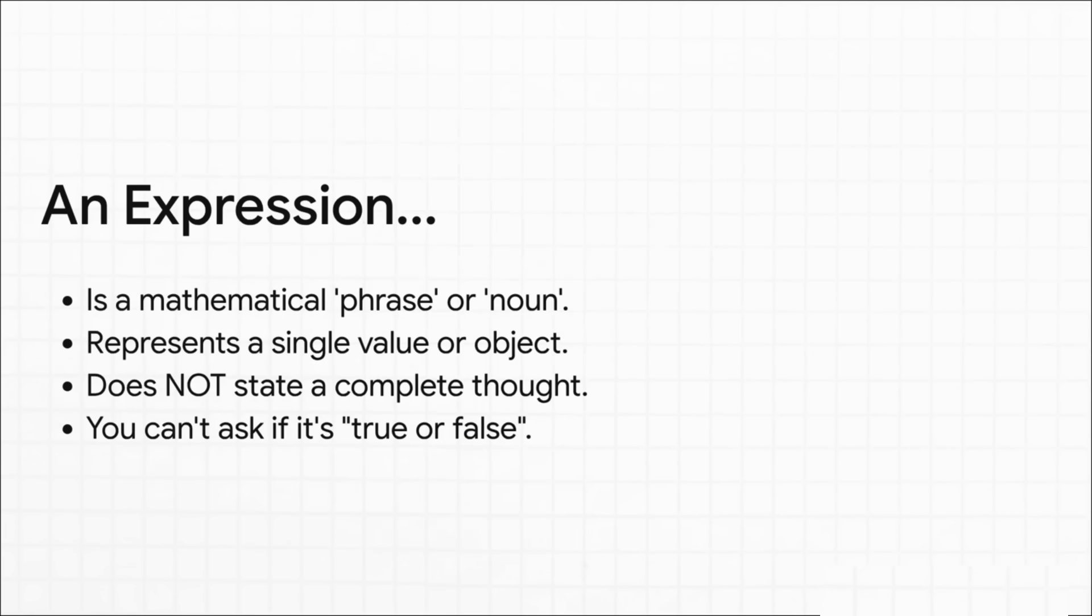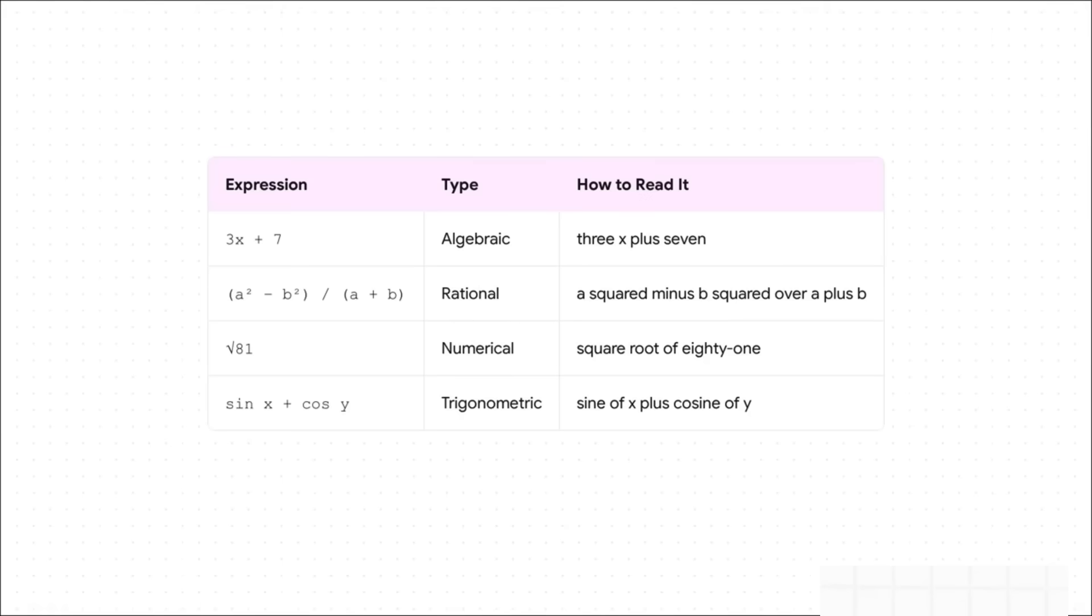So here's the deal. An expression is just a phrase. It represents one single value. It's not telling you a whole story. It doesn't state a complete thought. And this is the most important part. You can't ask if an expression like five plus two is true or false. It just is. It's the number seven. That's it.